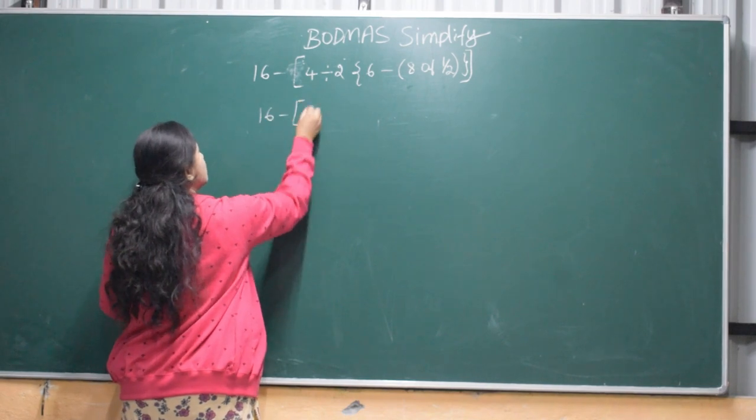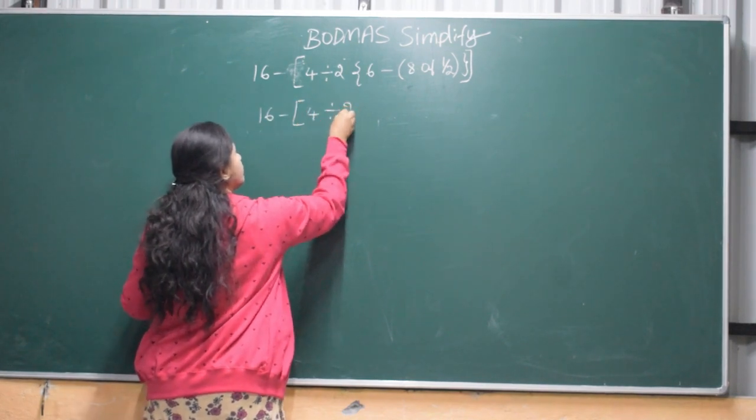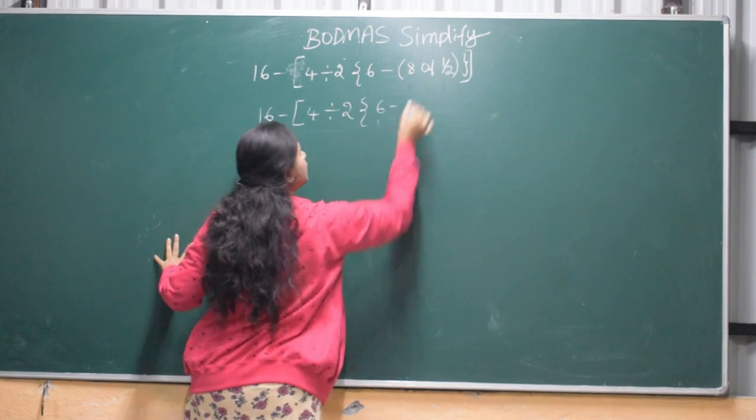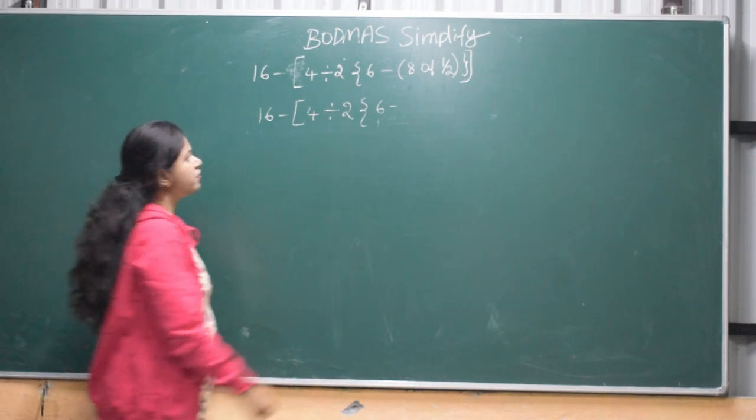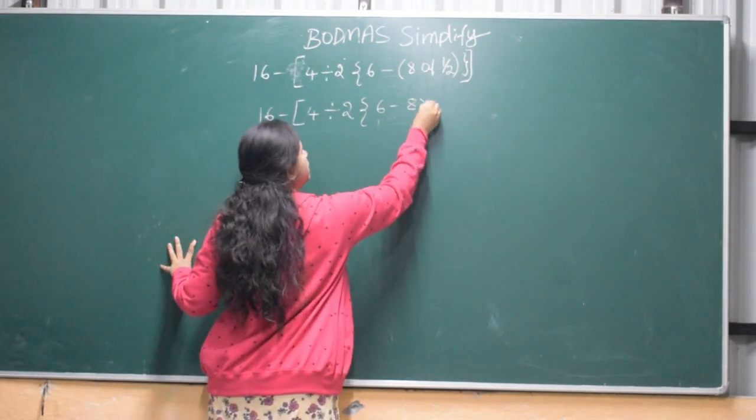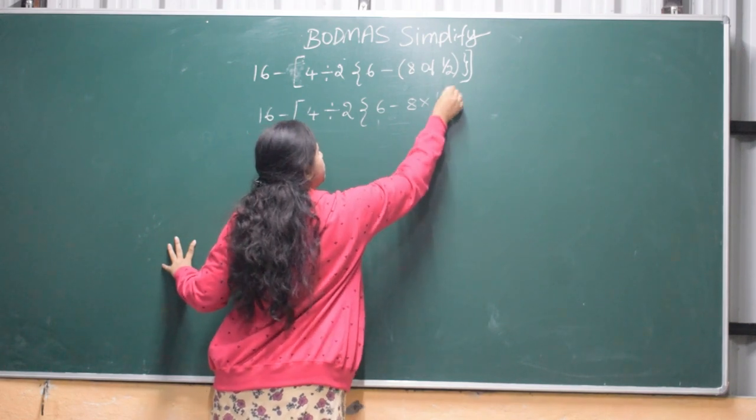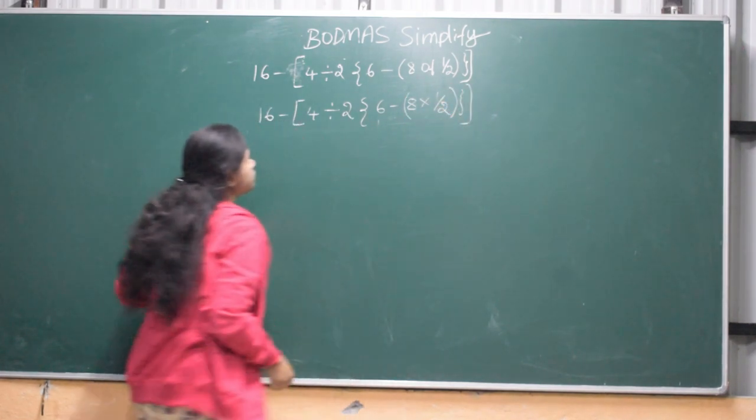Same. Now we are going to cut off, then multiply. 8 into half.